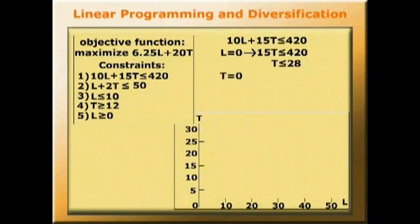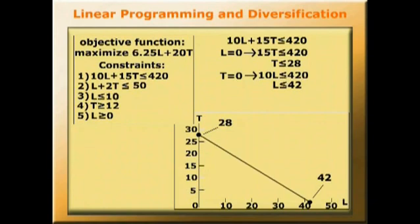Now if we set T equal to 0, we get 10L is equal to or less than 420, L equals 42. So we've now got two pairs of coordinates established, and we can plot the line using those pairs of coordinates.